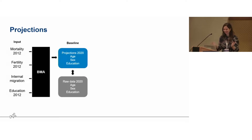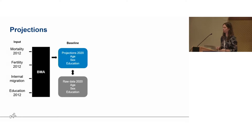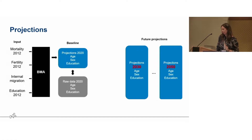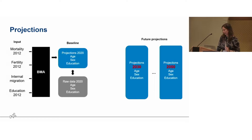Once this is established, we feed the data from the projections back into the model to create projections for 2030, 2040, and 2050. We do this for the middle-of-the-road scenario based on the raw data, and then we compare that with the sustainable or optimistic scenario — sustainable development — and with the pessimistic scenario, regional rivalry.